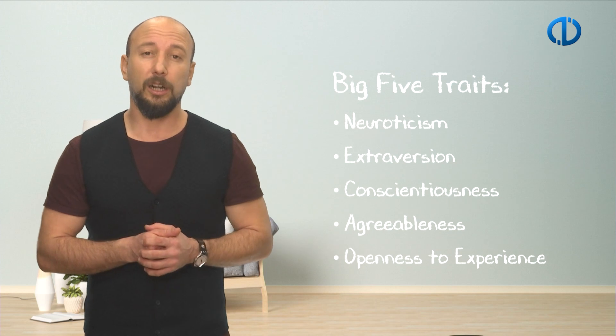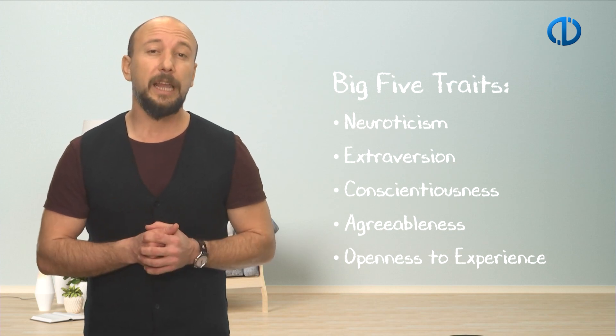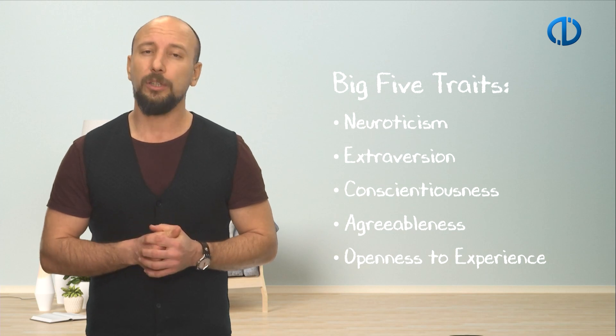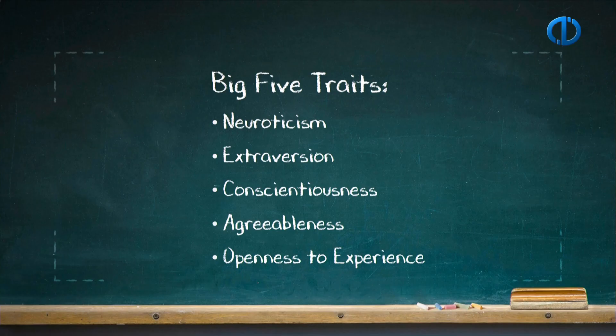The Big Five factors are neuroticism, extraversion, conscientiousness, agreeableness, and openness to experience. Neuroticism is defined as the chronic instability of emotional adjustment. Extraversion, being an interpersonal construct, is closely associated with positive affect. Conscientiousness points out individual differences in terms of responsibility, reliability, organization, and control.